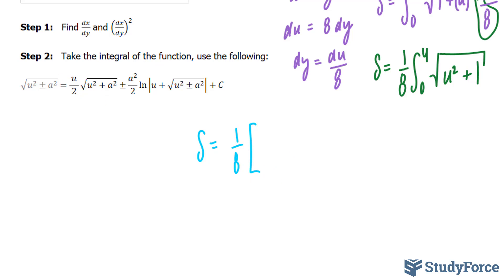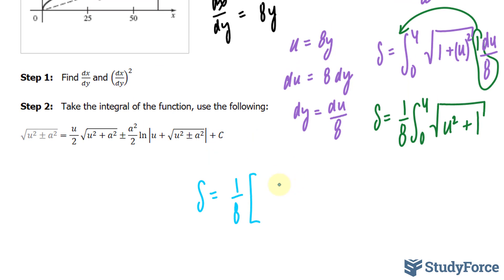u over 2, and remember, u is set as 8y, so 8y over 2, the square root of 8y to the power of 2, which is 64y squared, plus 1. Plus 1 to the power of 2 is 1, so that's half.